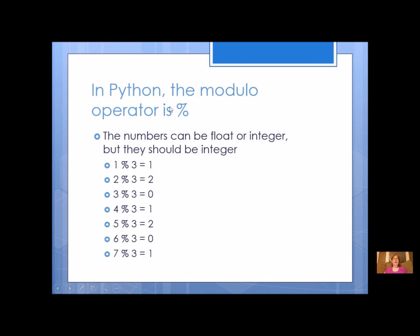In Python, the modulo operator is the percent symbol. Numbers could be integer or decimal, but they really should be integer because if I have a decimal here, it's going to give me the remainder, but it's going to make it a decimal, which is kind of weird because remainders aren't really decimals. So you should keep your numbers all integers.